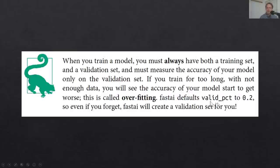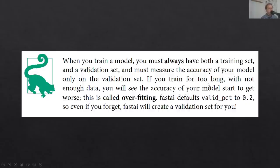I wanted to talk about valid_pct=0.2. As we described, valid_pct grabs in this case 20% of the data and puts it aside in a separate bucket. When you train your model, your model doesn't get to look at that data at all — it's only used to show you how accurate your model is. If you train for too long, or with not enough data, or a model with too many parameters, after a while the accuracy of your model will actually get worse. This is called overfitting, and we use the validation set to ensure that we're not overfitting.